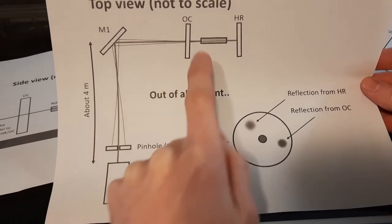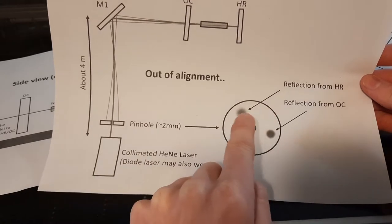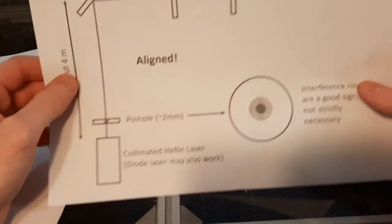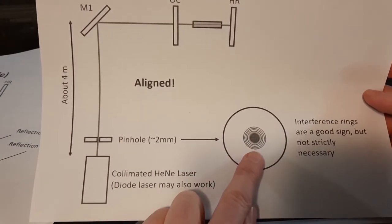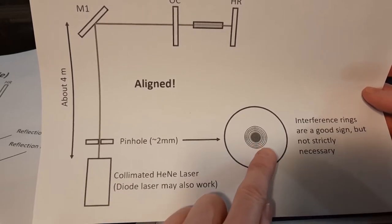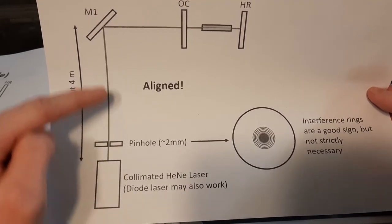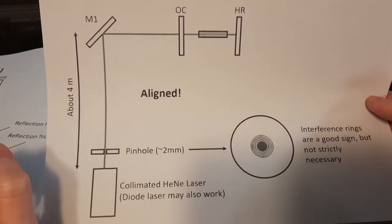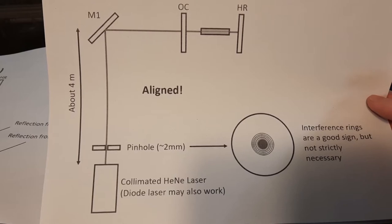And we know that this whole resonator is aligned when the spots here, which you can see here, are actually on top of the pinhole, like this. And you may actually see interference rings with a good collimated laser, but I don't think it's very necessary. And the thing that makes this setup so precise is that this distance here is, in my case, about 4 meters. Alright, I think that's enough for the theory. Let's look at how this is actually done in real life.